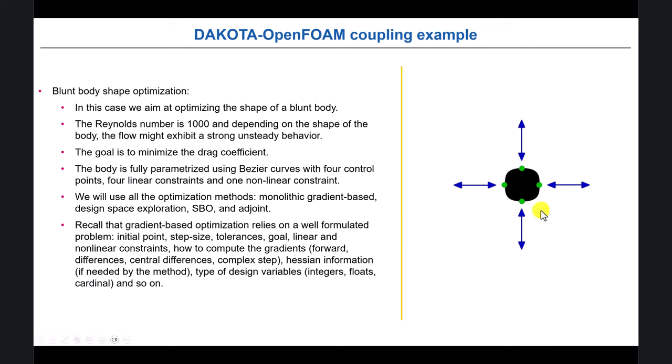Basically we have this shape and we have four control points. By modifying those four control points using a Bezier curve, we're going to change it, and we want to reduce drag. Never forget to formulate your problem — the best shape for minimum drag would just disappear to nothing, which may be a feasible solution but not useful. We need airflow, so we add constraints to arrive at a specific geometry.